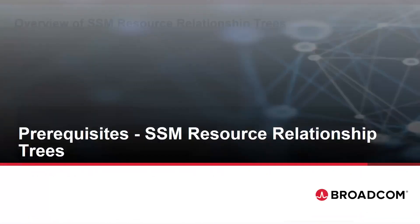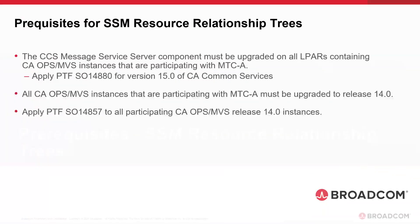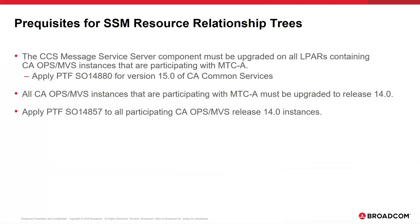The next section will discuss what needs to be done before you can start using the SSM Resource Relationship Trees feature. The CA Common Services Message Service Server component — the component that allows MTCA to talk to other instances of Ops MVS — must be upgraded on all of your LPARs that have instances of Ops MVS. If you are running version 15 of CA Common Services on a particular LPAR, you must first install the SO14880 PTF on that LPAR to get the required changes. In addition, each Ops MVS instance that participates with MTCA must be upgraded to release 14, followed by applying PTF SO14857, which contains the SSM Resource Relationship Trees feature.